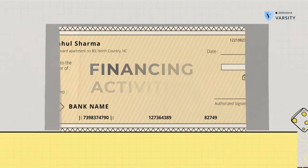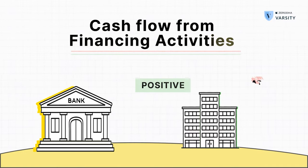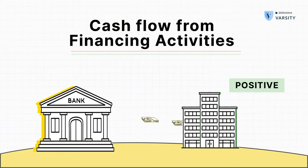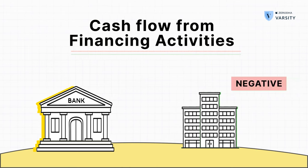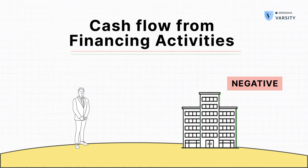The financing activity of a company represents all the financial activities it carries out, such as borrowings from a bank or paying out dividends. The financing activity can either be positive or negative. If it is a positive number, that means the company is borrowing fresh capital, probably to fund its capex or working capital requirements. If the number is negative, it either means the company is repaying a loan or giving out dividends to its shareholders.